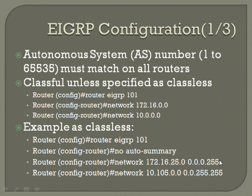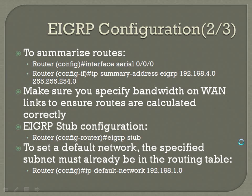If you want to summarize routes on a particular interface, jump into interface configuration mode by selecting the appropriate interface and number. Then submit 'ip summary-address eigrp' followed by your IP and subnet. In this case it's 192.168.4.0 with a .254.0 mask, which covers 192.168.4.0 and 192.168.5.0. So you can summarize a set of addresses instead of having both individual routes floating around.